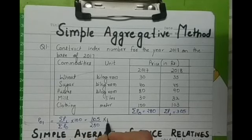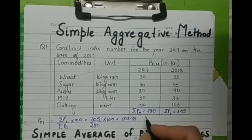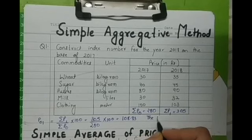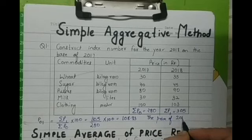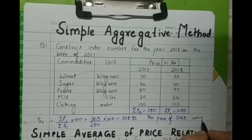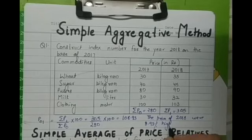That is 305 upon 280 into 100 equal to 108.93. This means the prices in 2018 were 8.93 percent higher than prices of 2017.